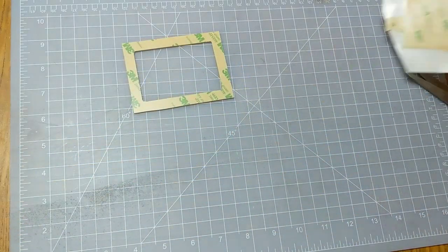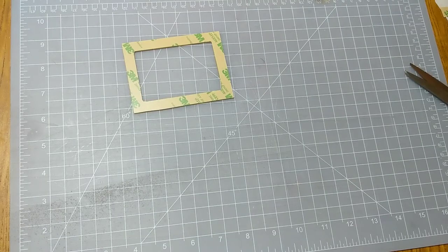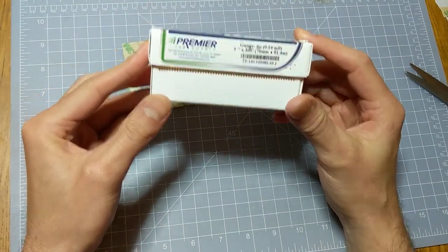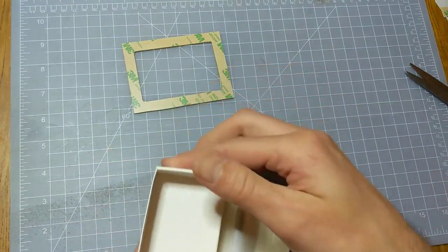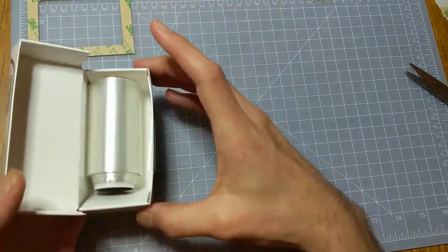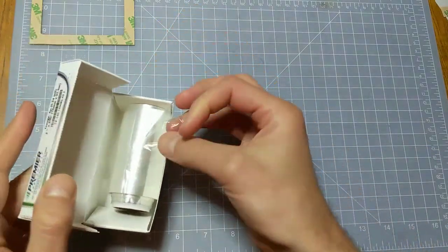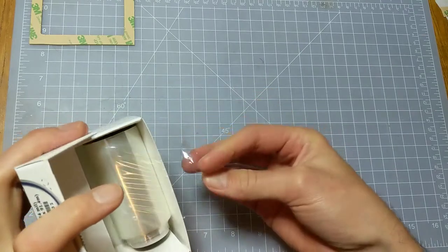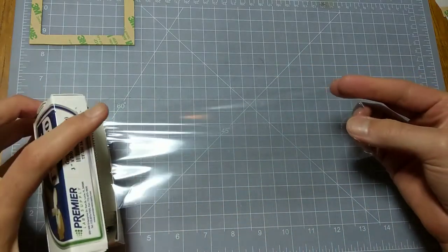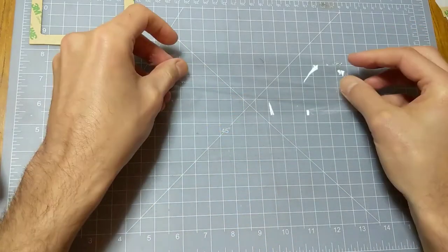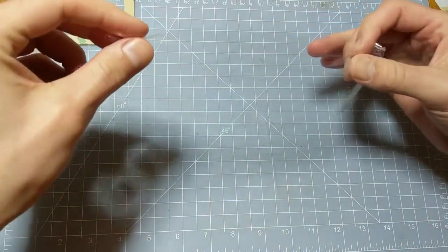So now that's ready for the mylar film. Premier Lab Supply sells a 6 micron mylar film on a roll that's just the right size to cover the frame. I start by taping the mylar down to a work surface. We want to get a nice flat, taut surface of the mylar, so it needs to be tight.